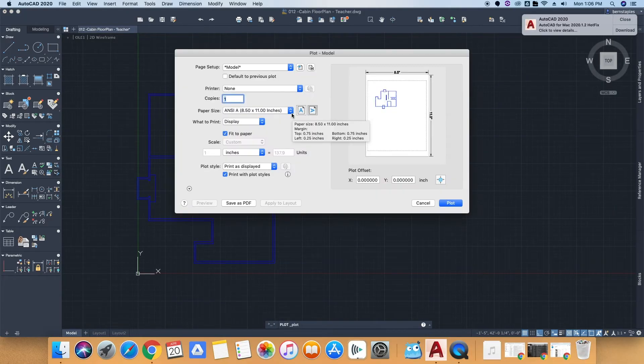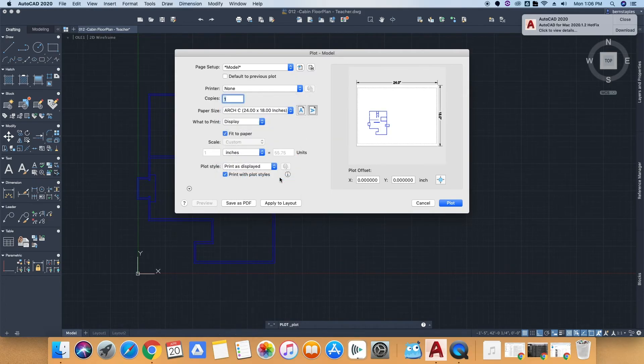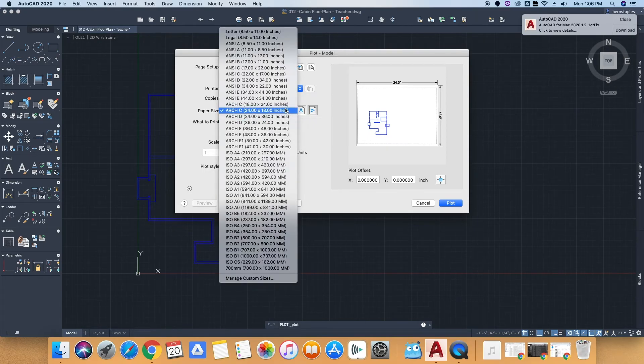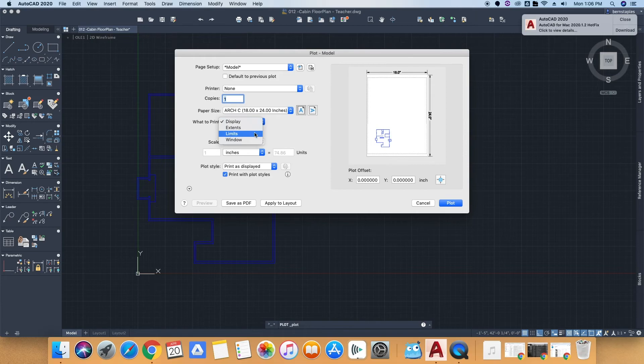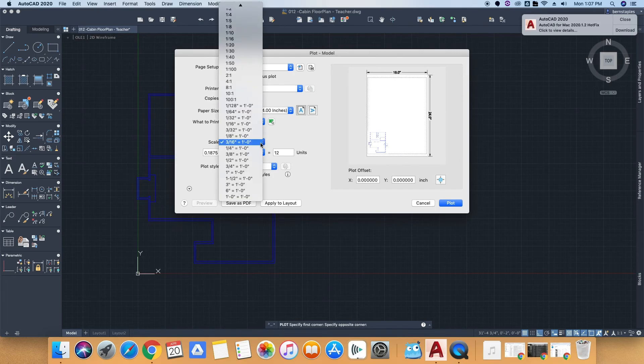When you go to print, you're going to change the paper size to arch C, which is 18 by 24. Then you're going to change it to window, print the window, and you're going to change your scale, custom scale, to half inch equals one foot. And then hit the save to PDF at the bottom.